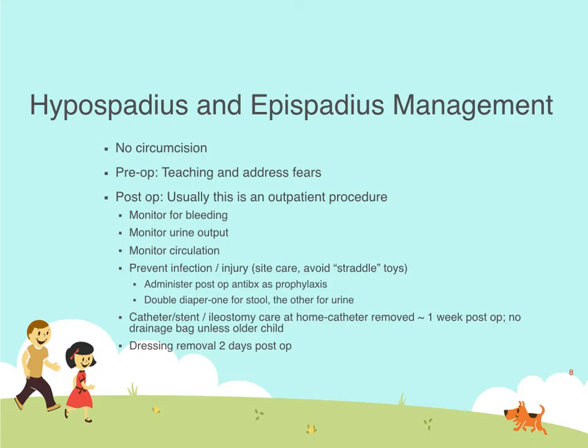Postoperatively, there's a lot of education. These procedures are now done on an outpatient basis. We need to tell parents to monitor for bleeding — there will be blood in the urine initially, which is expected, but it should not be profuse and it should lessen with time. Monitor the child's urine output because there can be swelling and obstruction, so we want to make sure there is output. Monitor circulation and ensure the color of the penis is normal.